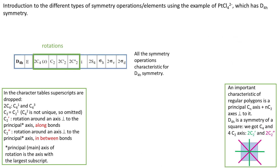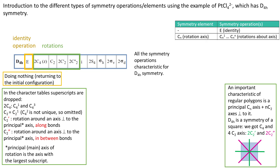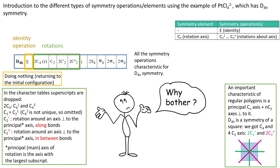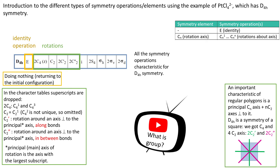Next type of symmetry operation is the identity operation. The E operation describes the action of doing nothing or returning to the initial configuration, which is the same thing. Please notice that there isn't a symmetry element associated with the E operation, because no geometrical construction is required to leave a molecule unchanged. Although E does nothing, group theory would not work without it.